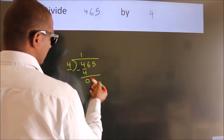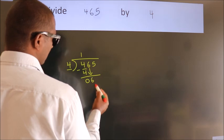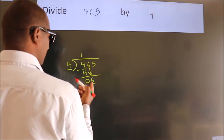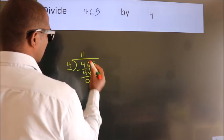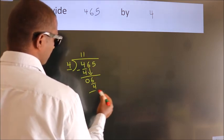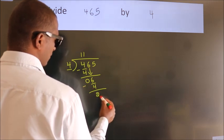After this, bring down the beside number. So 6 down. So 6, a number close to 6. In 4 table is 4 once, 4. Now we subtract. We get 2.